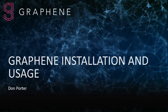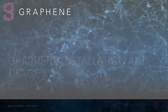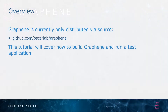In this part of the tutorial, I'm going to cover Graphene installation and usage. At the moment, Graphene is only distributed by source code. You can download this from our GitHub site that you see here. And in this tutorial, we'll explain how to compile it and run a test application.